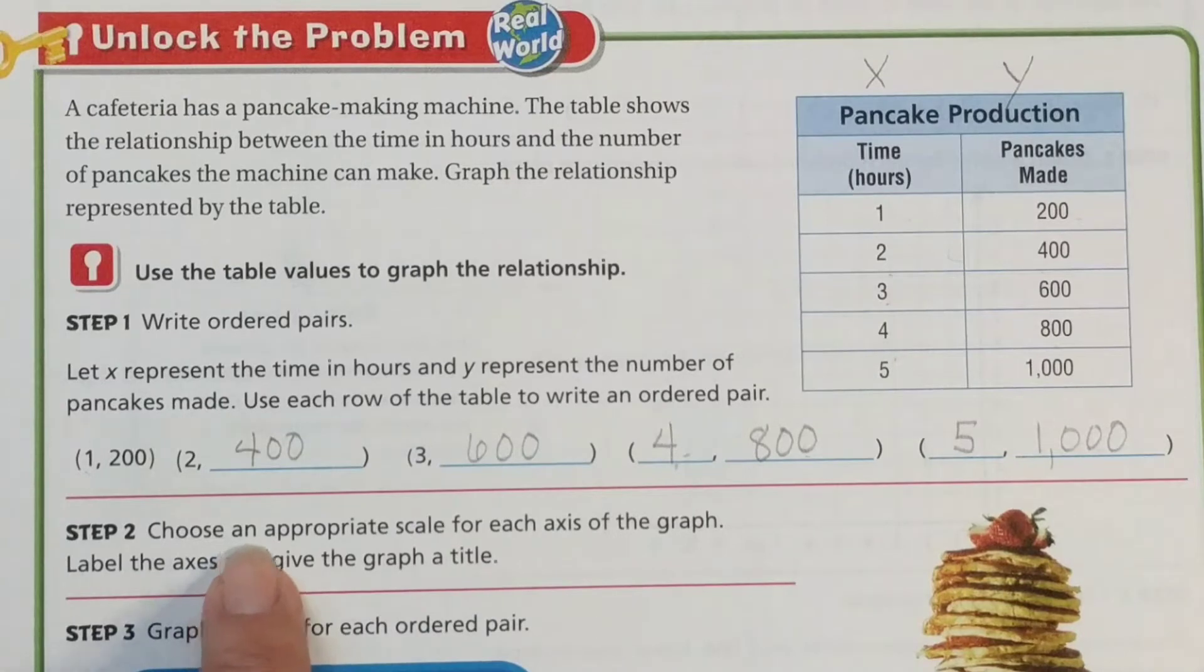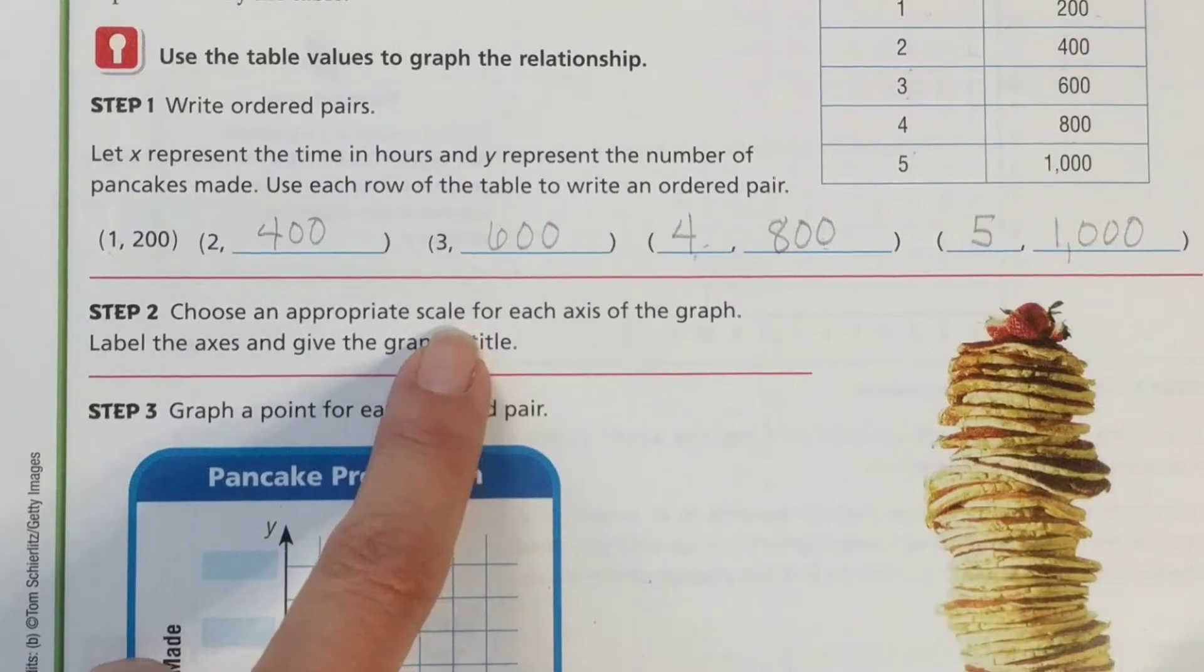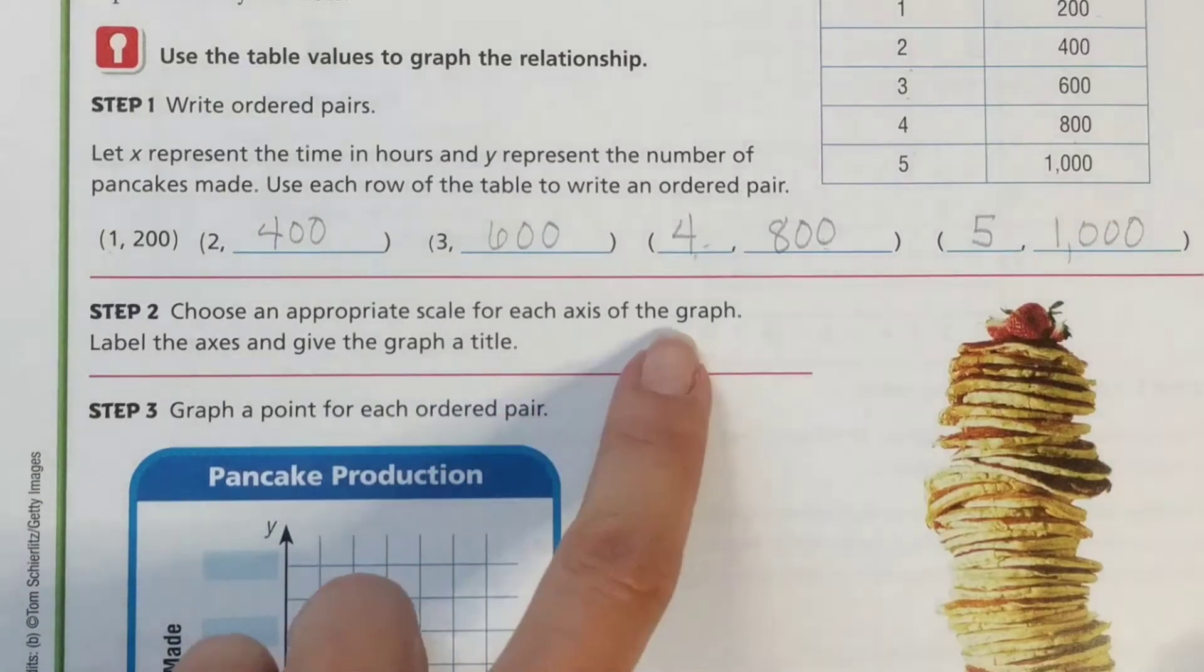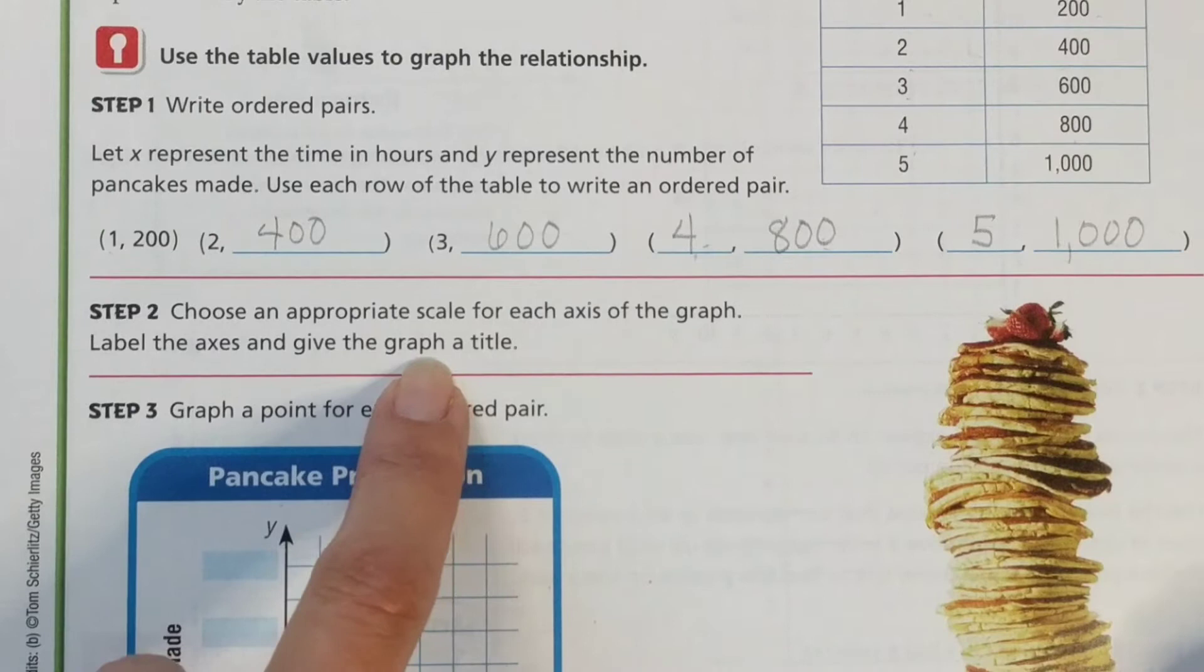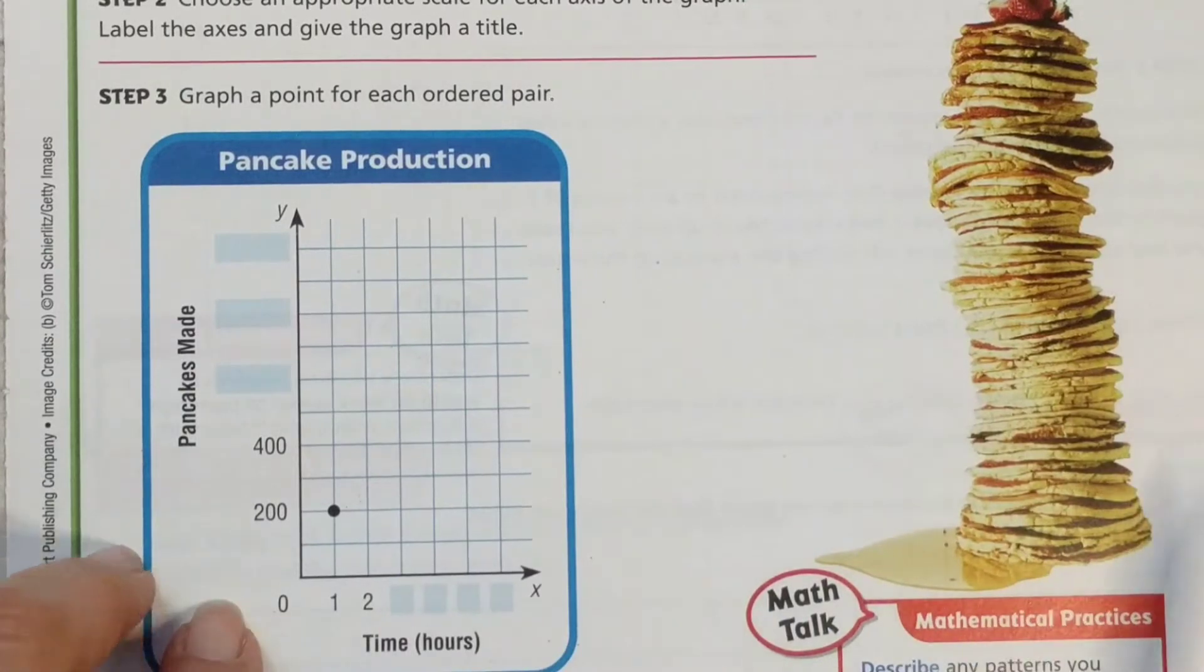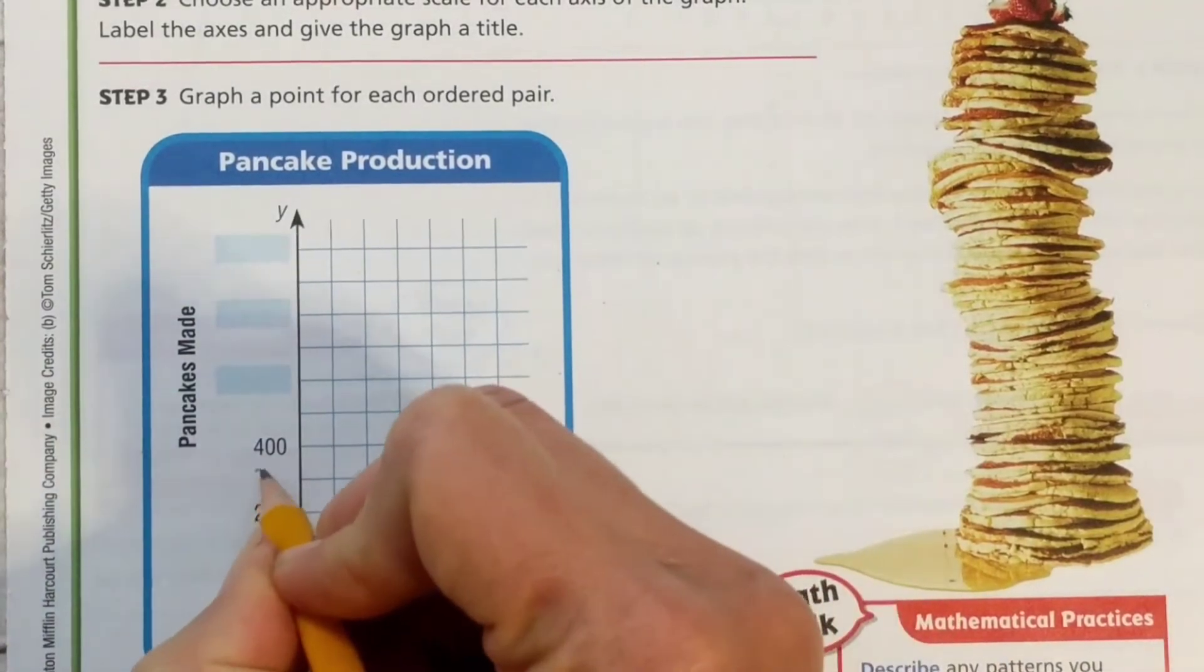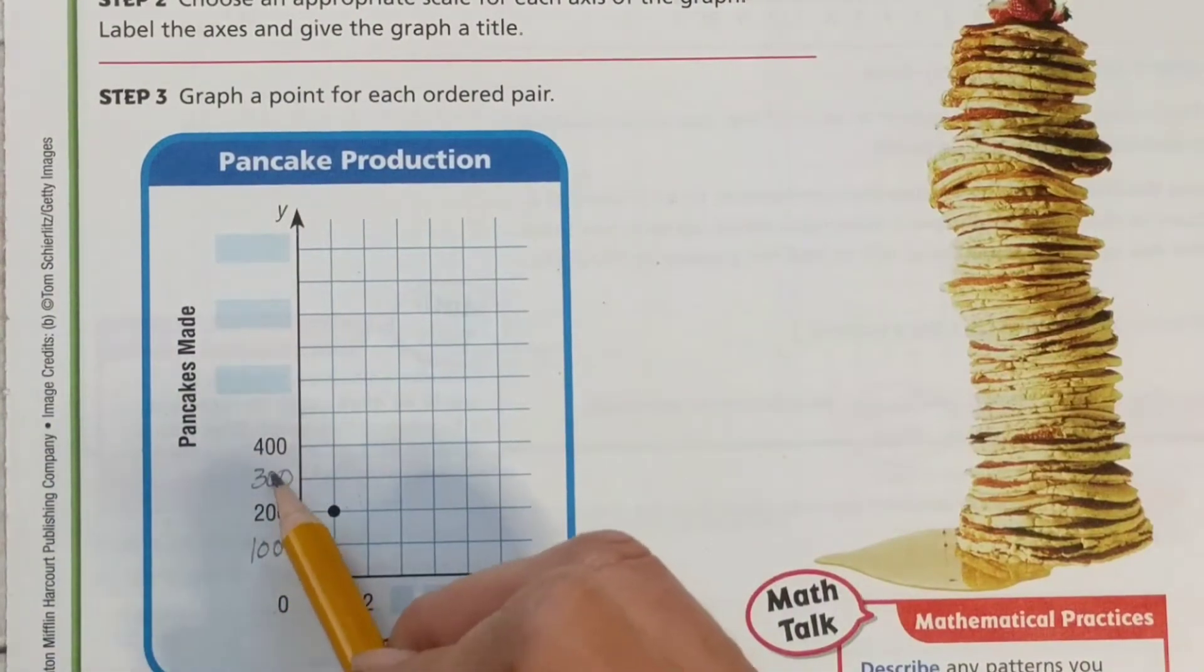Choose an appropriate scale for each axis of the graph, meaning what's going to be the count-bys in your graph. Label the axis and give the graph a title. Alright, so graph a point for each ordered pair. So first, they started our scale for us. Their count-bys are 100. This line right here represents 100. This one represents 300. So we have 100, 200, 300, 400.